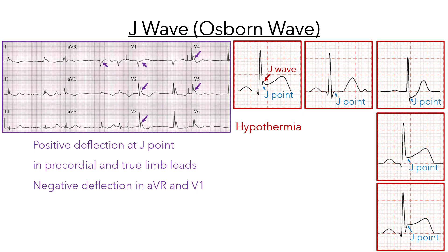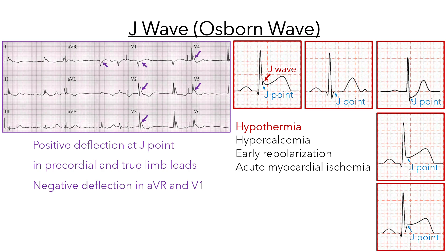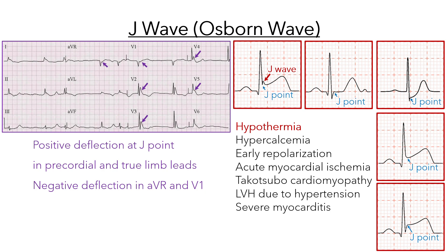It is most commonly associated with hypothermia, but they are not pathognomonic. J waves can be associated with several clinical conditions, including hypercalcemia, early repolarization, acute myocardial ischemia, takotsubo cardiomyopathy, left ventricular hypertrophy due to hypertension, severe myocarditis, Brugada syndrome, and neurological insults such as intracranial hypertension, severe head injury, and subarachnoid hemorrhage.